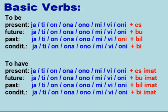Basic Verbs — To Be: Present — Oni Es (They are). Future — Oni Bu (They will be). Past — Oni Bill (They were). Conditional — Oni Bi (They would be). To Have: Present — Oni Es Imat (They have). Future — Oni Bu Imat (They will have). Past — Oni Bill Imat (They had). Conditional — Oni Bi Imat (They would have). Of course, instead of Oni you can use any other pronoun: Ya, Ti, On, Ona, Ono, Mi, Vi, Oni.